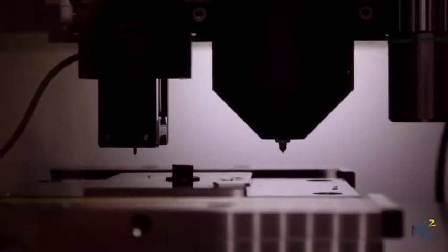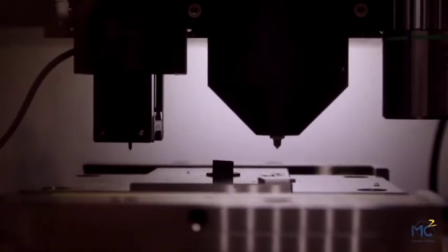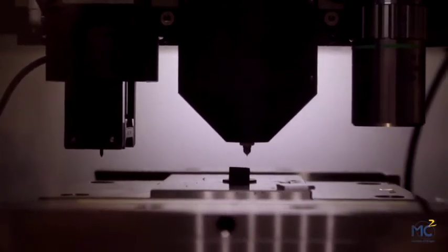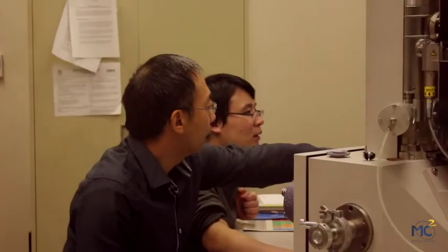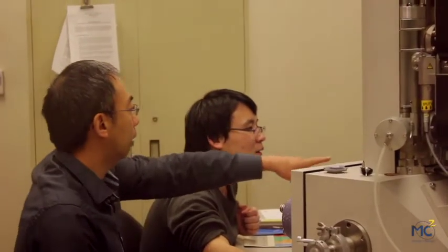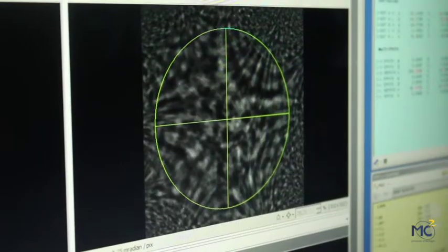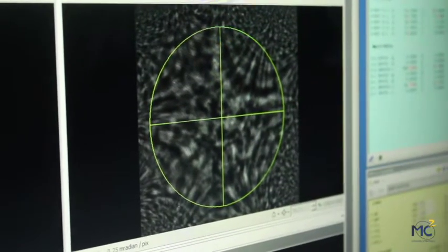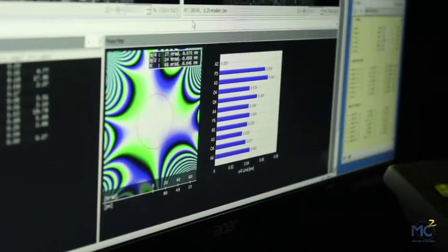What a student can expect from MC Squared is support from staff, everything from training on how to basically use the system, up to very high-end applications. Things like local electrode atom probe, electron energy loss spectroscopy, all the way down to how to turn the knobs and make the best picture possible.